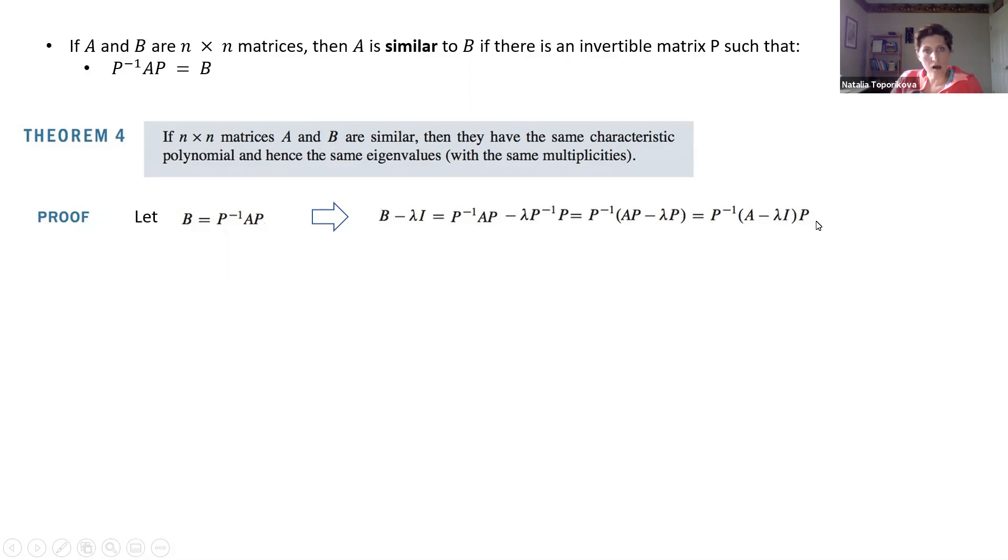But it's not what we're looking for. We are looking at the characteristic equation, which is determinant of B minus lambda I. Let's use our result we found in the previous line and calculate its determinant. And again, we know that the determinant has a multiplication property, so we can break down the product into the product of determinants.